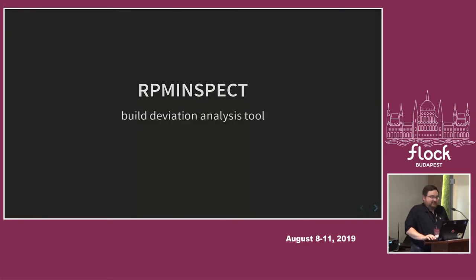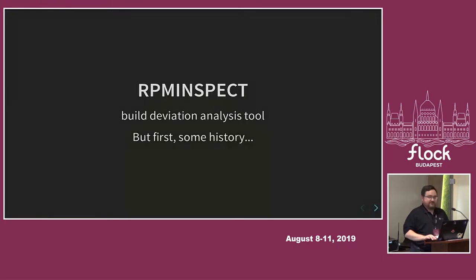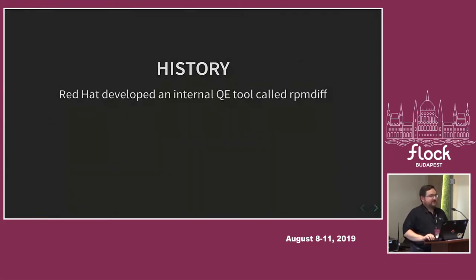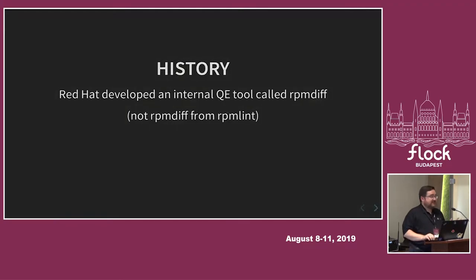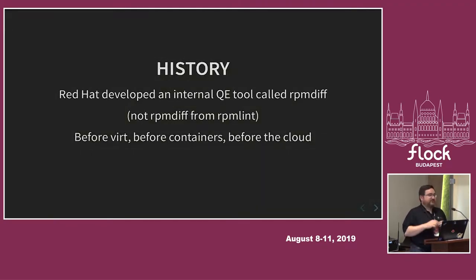Now, RPM Inspect — it's a build deviation analysis tool. Let's talk about a bit of history first. Red Hat developed an internal QE tool called RPM Diff — not the RPM Diff that you've seen as part of RPM Lint; we like to reuse names. RPM Diff began life in the internal tool around 2003–2004. Before virt, before containers, before the cloud.